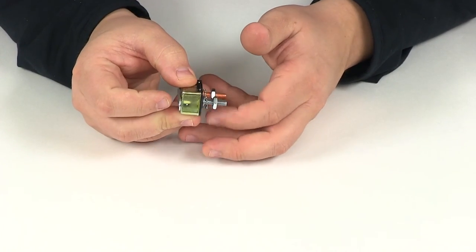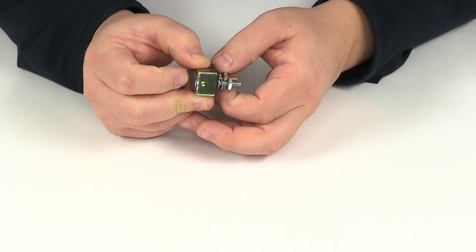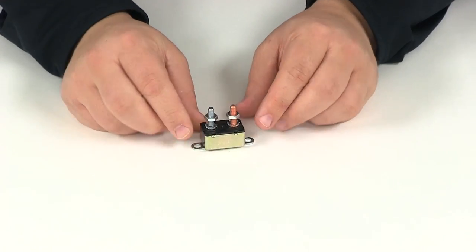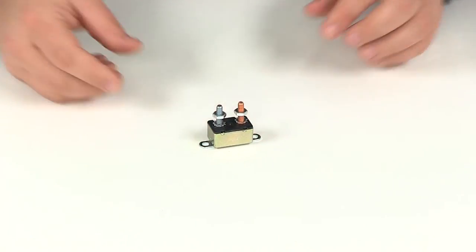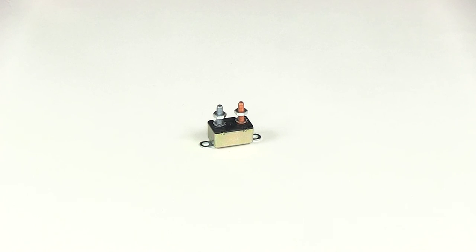It's also going to have the mounting hardware on those terminals and that's going to do it for our review of part number PK54530. This is the Pollock 30 amp circuit breaker.